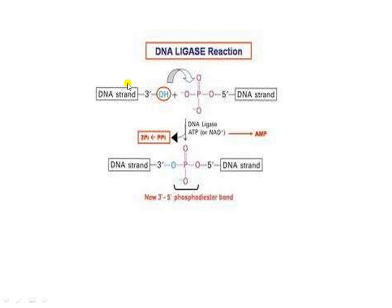In this diagram, the 3-end consists of the hydroxyl group and the 5-end consists of the phosphate group. There is formation of the phosphodiester bond by adenylation of the enzyme DNA ligase, resulting in the joining of the two strands of DNA.